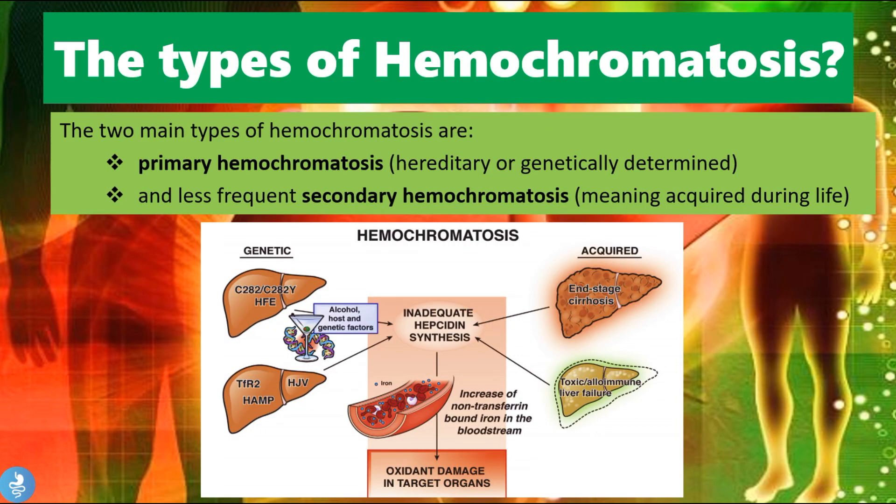There are two main types of hemochromatosis. The first is called primary hemochromatosis, which is a hereditary or genetically determined form of the disease. The second, less frequent type is secondary hemochromatosis, meaning it is acquired during life.